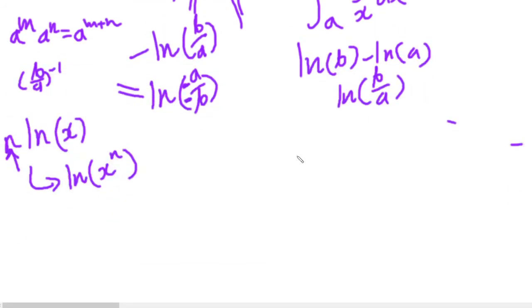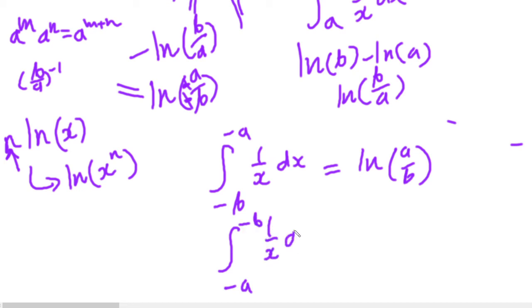So if minus ln b over a is equal to ln a over b because it's b over a to the power of negative 1 inside the bracket, and we're dealing with minus b and minus a here, then we're told that the integral from minus b to minus a of 1 over x dx, where these minuses cancel out because they're on the top and bottom of the fraction, is equal to ln a over b or basically the integral from minus a to minus b of 1 over x dx.